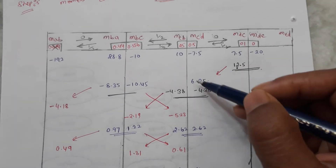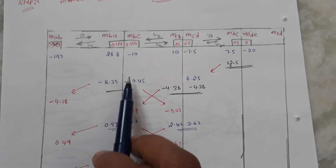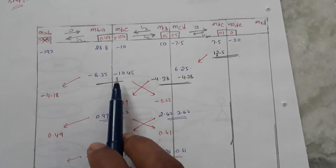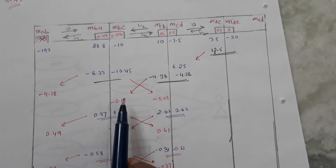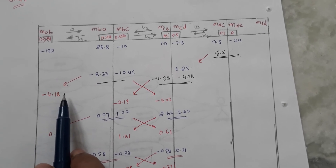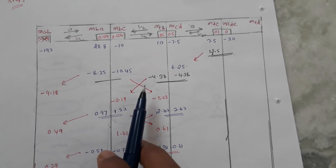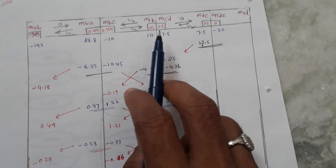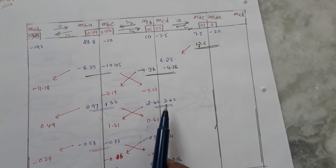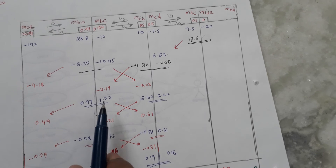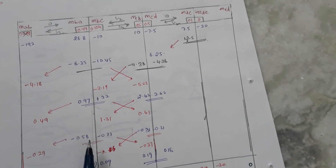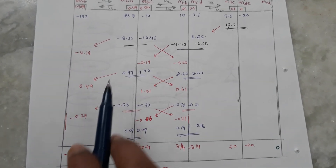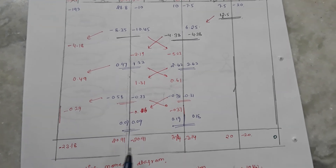We continue balancing and distributing at each joint, sharing the moments according to distribution factors and carrying over half to the far ends. We keep iterating — each cycle the unbalanced moments get smaller — until the values are approximately zero. Once converged, we add all moments from start to finish for each member to get the final end moments.